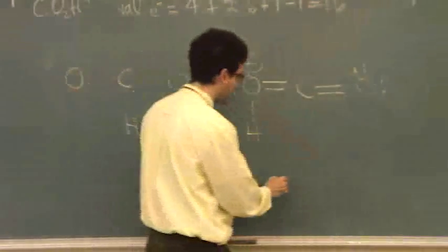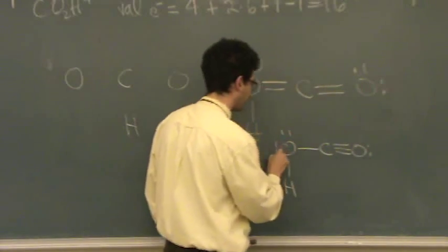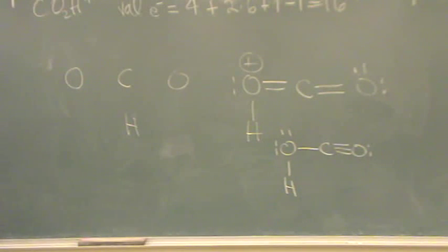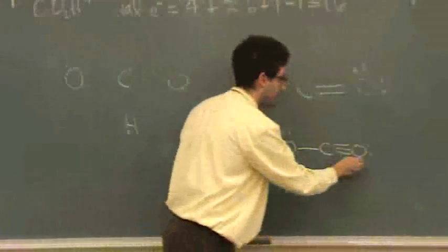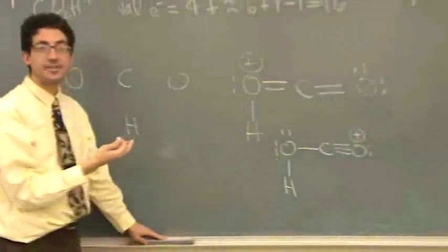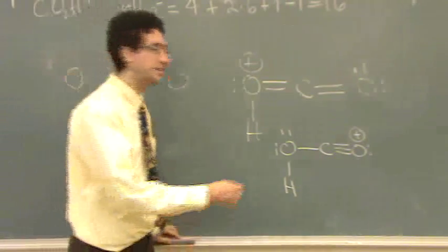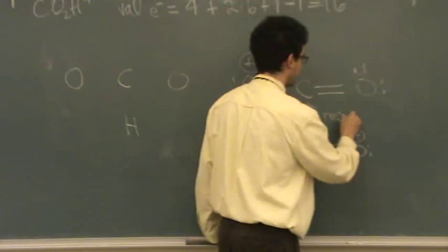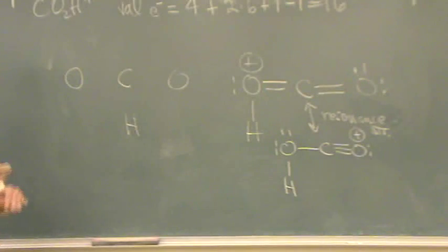We could have also done the other possibility. If we took both lone pairs from one side, it made a triple bond. What I did up here is I took a lone pair here and here, making two double bonds. You could have put both from the same atom — that's fine. Which atom has a non-zero formal charge on the right? Plus one — good. Almost zero difference; they're pretty identical. These have a special name: resonant structures. When two structures are the same except for where you took the electrons, they're called resonant structures.